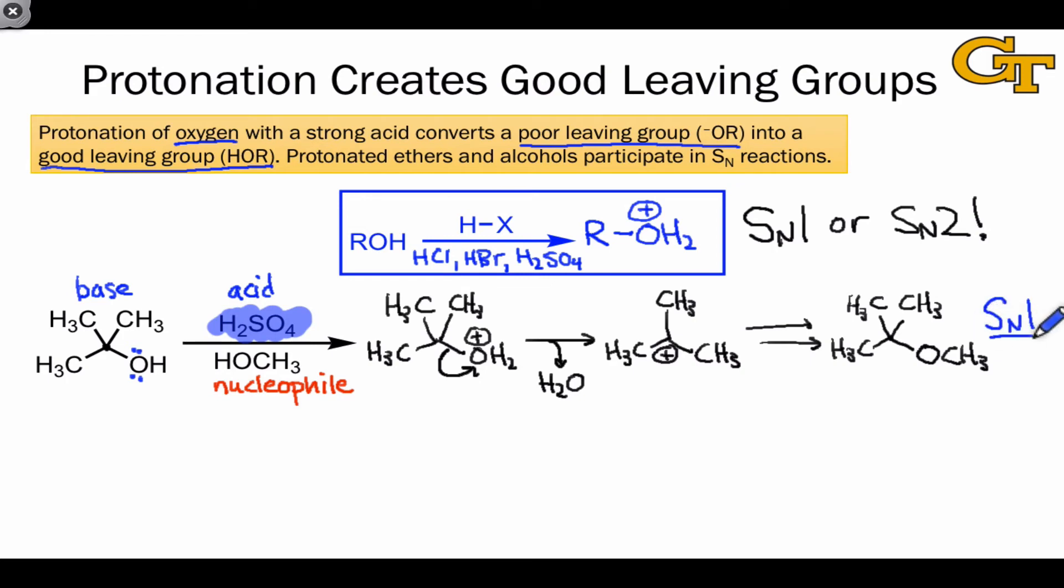The overall process here is SN1, owing again to the heavily substituted electrophilic carbon and the neutral nucleophile used. And the key point is that the strong acid converts a poor leaving group, hydroxide, into a good leaving group, water.